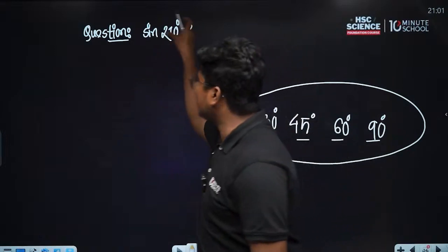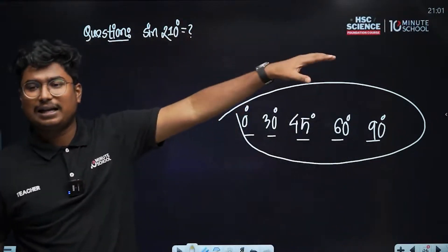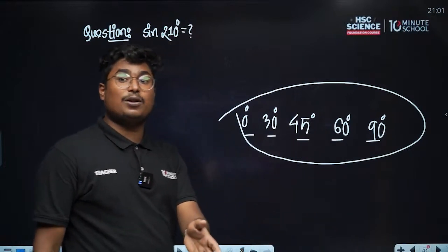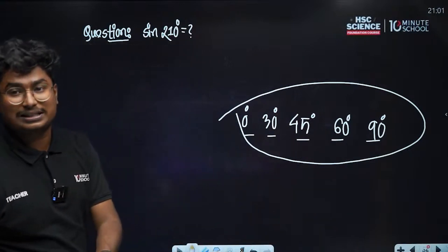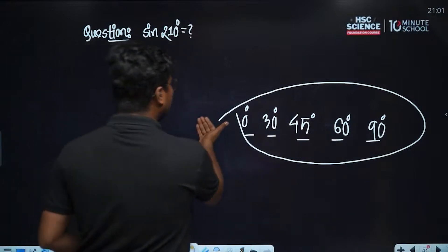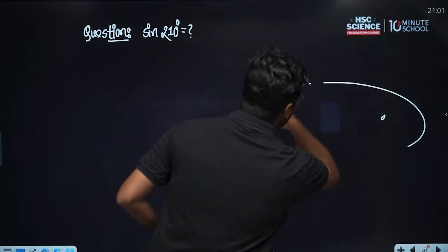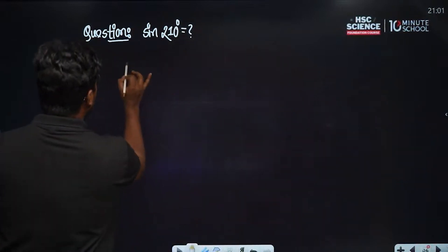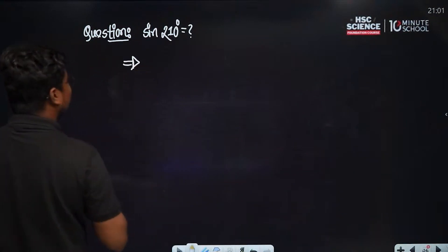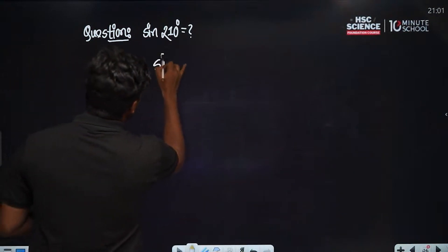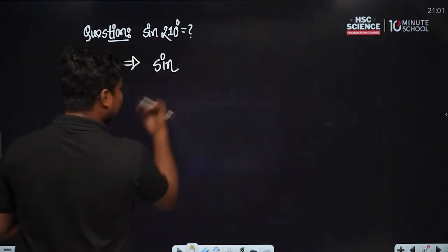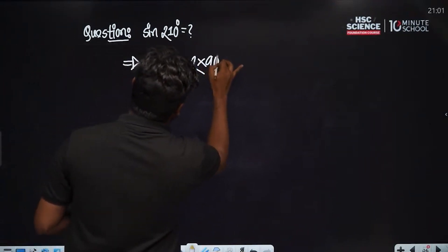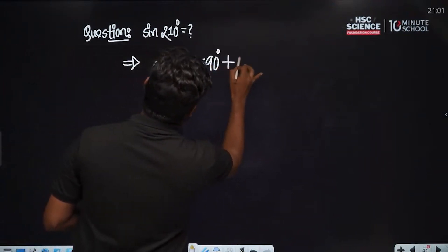But for 210 degrees, if you want to use this, you can learn how to use this class. We have to write this count as 210 degrees. We write: sin(210°) = sin(2 × 90° + 30°).